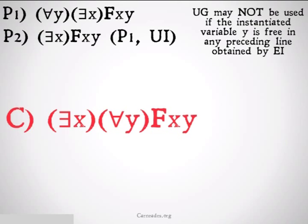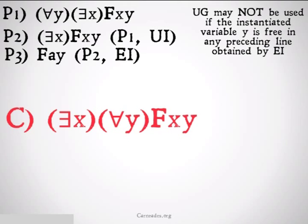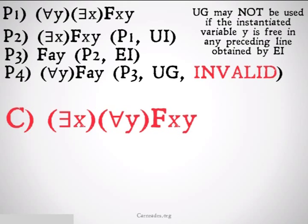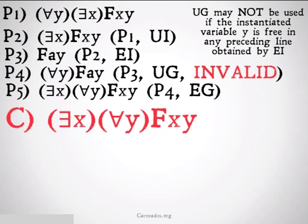Starting with premise 1 'for all Y there exists an X such that X bears relation F to Y,' we apply existential instantiation to premise 2 to get 'A bears relation F to Y' — that's fine, A hasn't appeared anywhere before. Here's where we run into a problem when we try to put the quantifiers back on. For premise 3 we try universal generalization: 'for all Y, A bears relation F to Y.' This is invalid because the Y in that line is free — and in fact it's free in the preceding line obtained by existential instantiation. Therefore this is not going to be allowed, and we'd end up with the invalid conclusion 'there exists an X such that for all Y, X bears relation F to Y.'